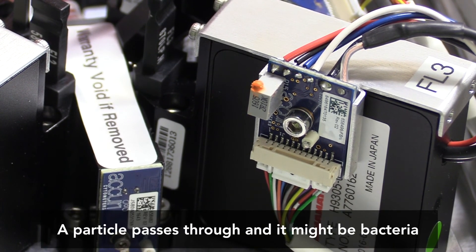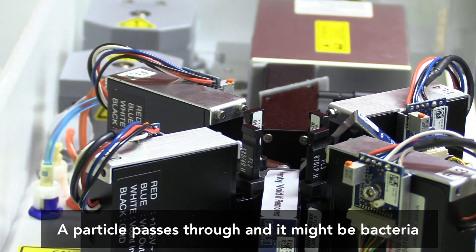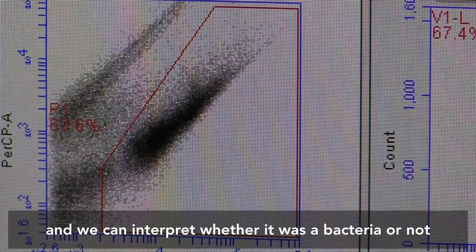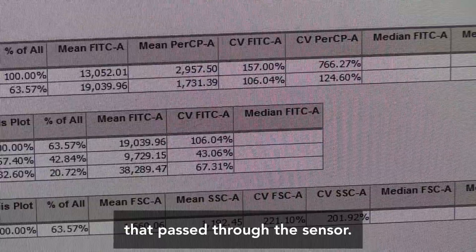As each particle passes through, and that particle might be a bacteria, the instrument detects it and sends a signal back to the PC. Then we can interpret whether it was a bacteria or not that passed through the sensor.